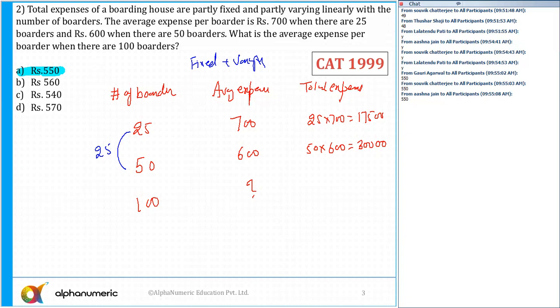The number of boarders initially there are 25, so 17,500 is the cost and here 30,000. So the total cost, what is the increase in the total cost?